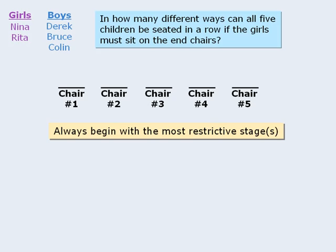Let's begin by seating a child in chair number one. Since this chair must be occupied by a girl and we have only two girls, there are two ways in which we can accomplish this stage. Once we have seated a child in chair number one, the next most restrictive stage is seating a child in chair number five, since we must seat a girl there and we have already seated one of the girls in chair one. So at this point we have only one girl remaining, so there is only one way to accomplish the stage of seating a child in chair number five.